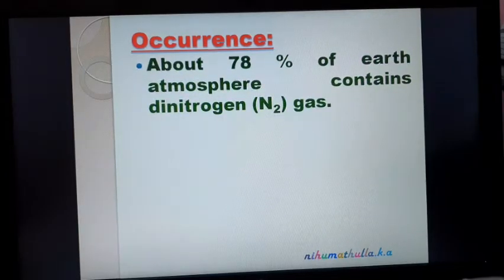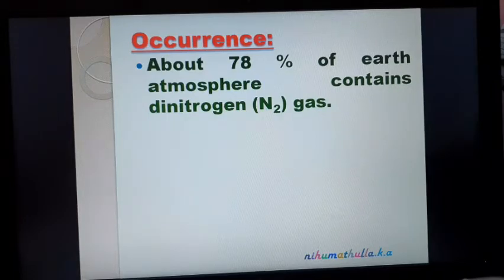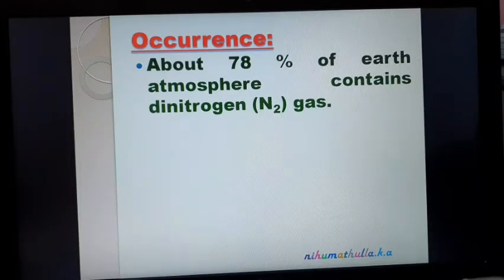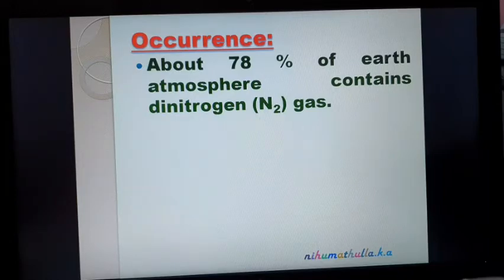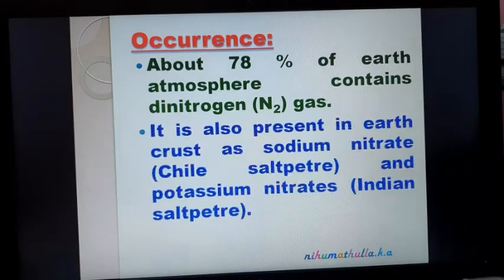Under this video we are going to discuss about occurrence and physical properties of nitrogen group elements. About 78% of the earth's atmosphere contains dinitrogen gas. In our atmosphere, the highest percentage of the gaseous substance is nitrogen — 78%. Nitrogen is important for the growth of plants. Our soil is a saturated solution of nitrogen.